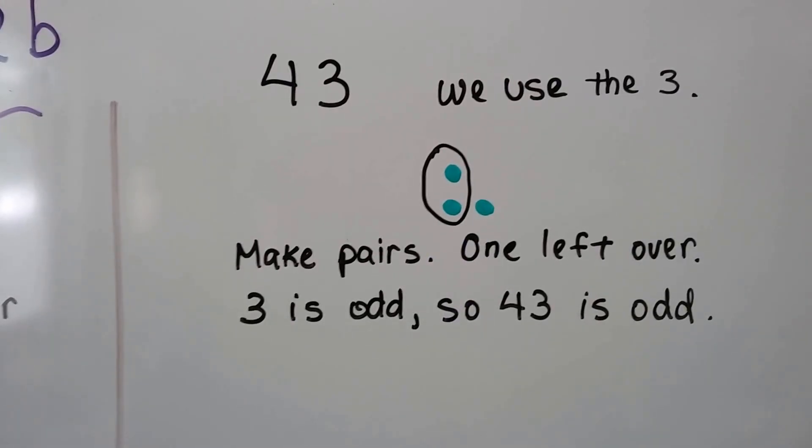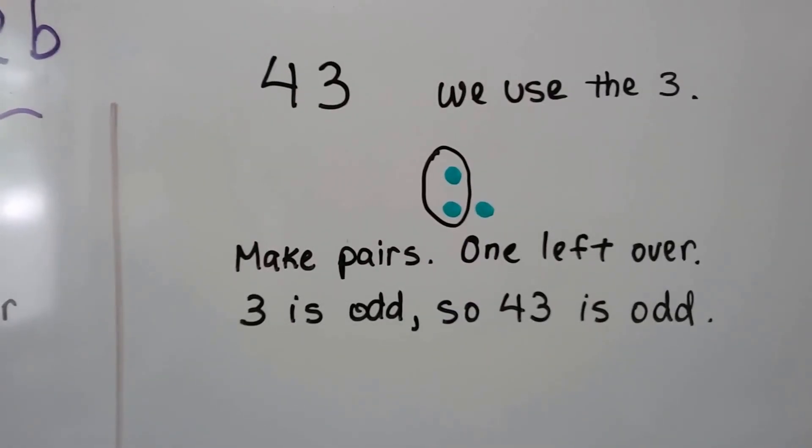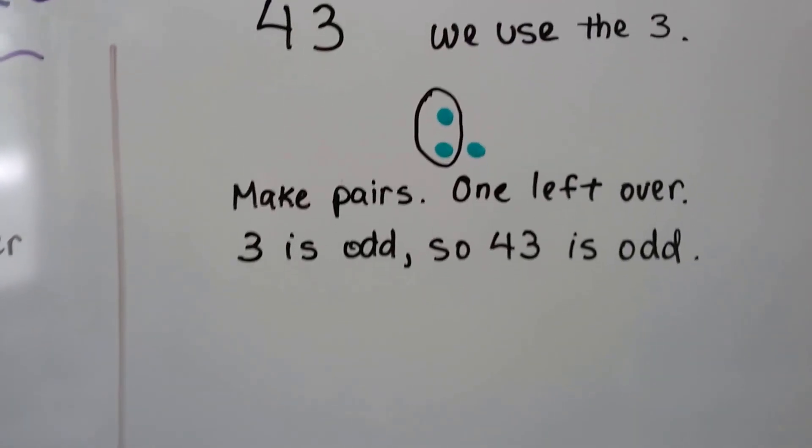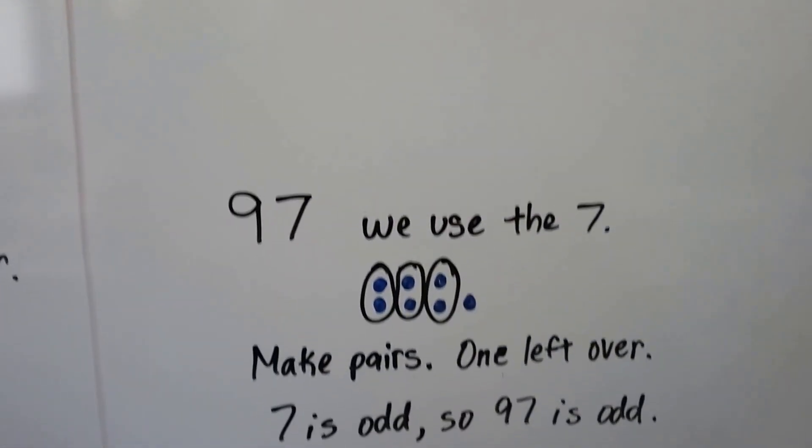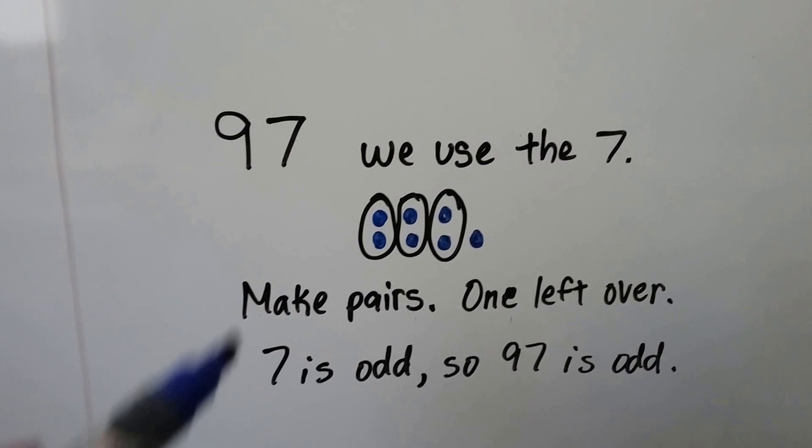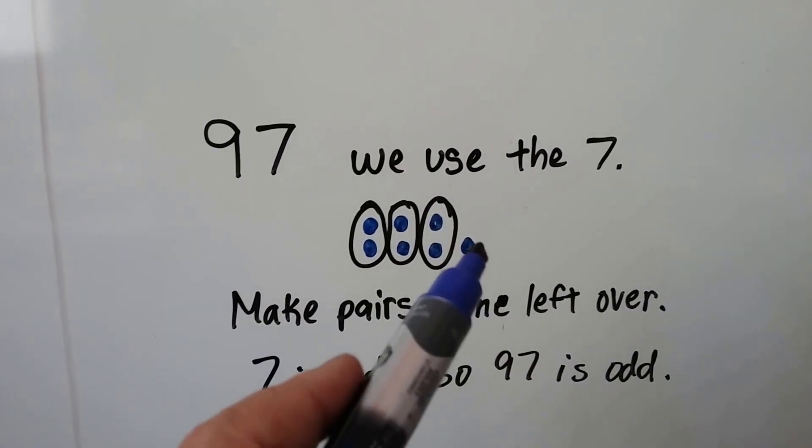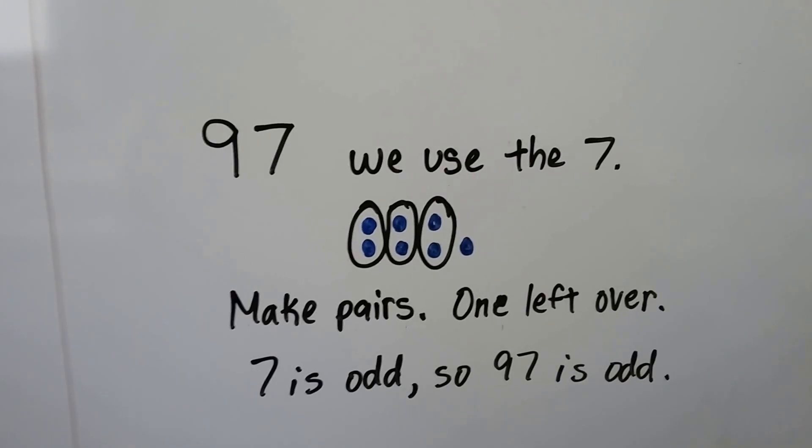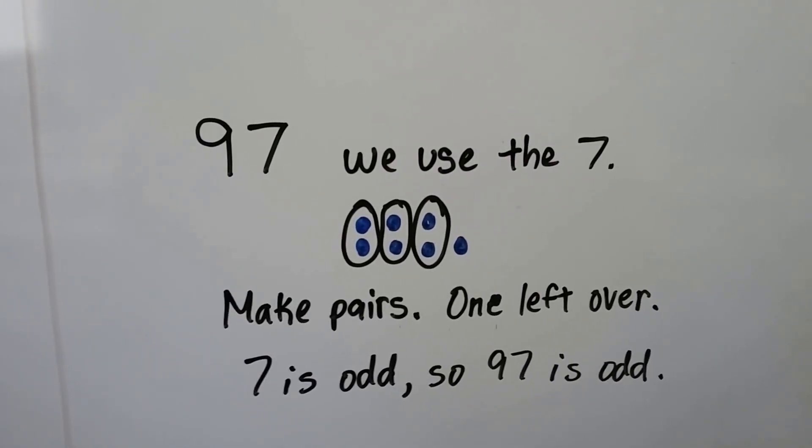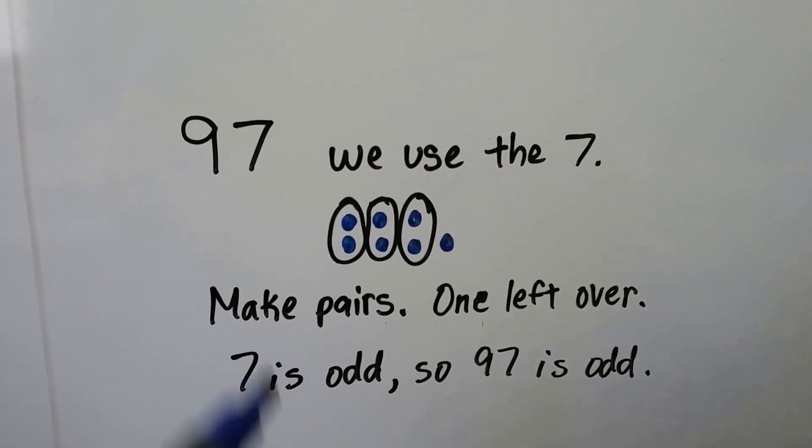We can see there's one left over, so 3 is odd, so 43 is odd. 97, we use the 7. We make pairs and there's one left over, so 7 is odd, so 97 is odd. If the ones place is odd, then 97 is odd.